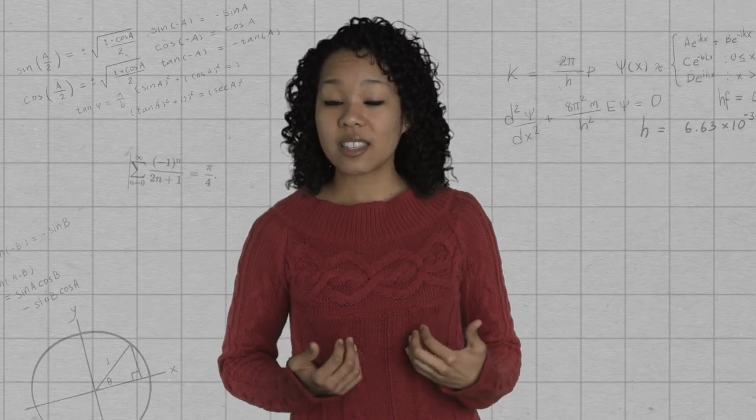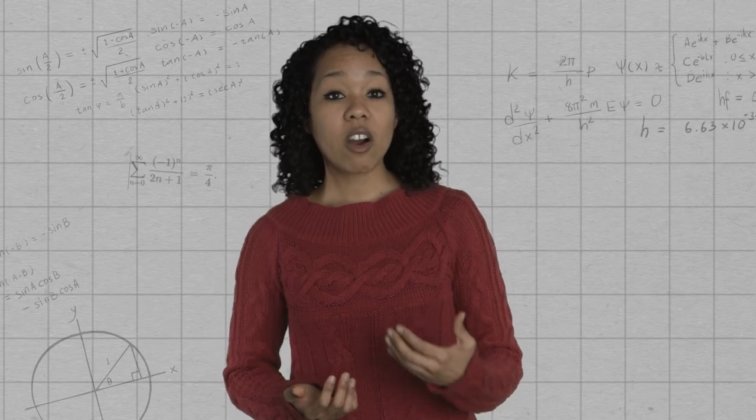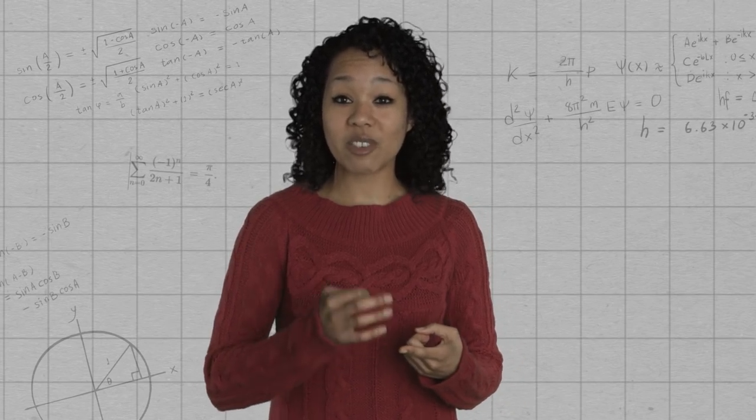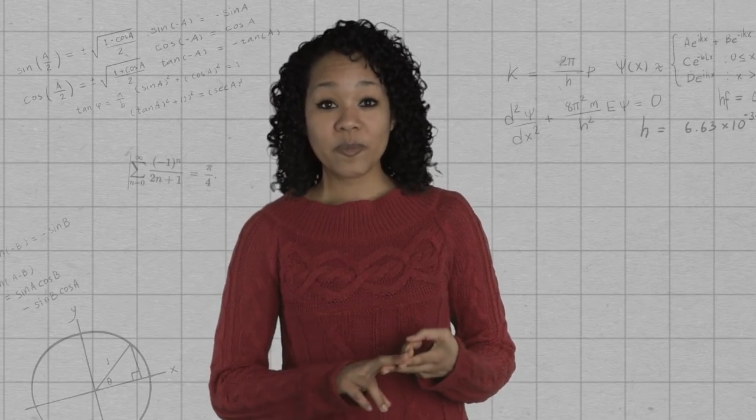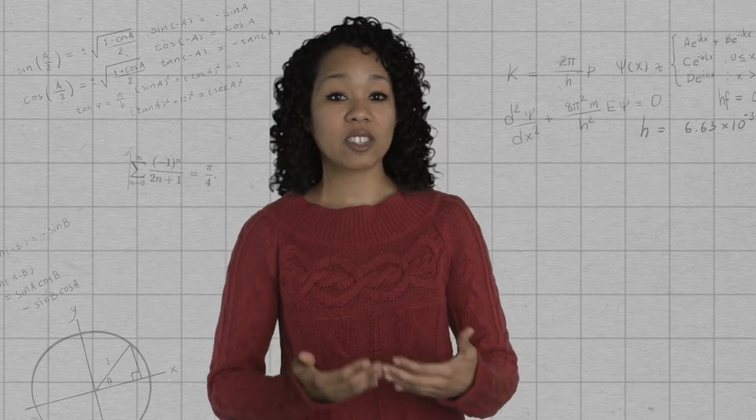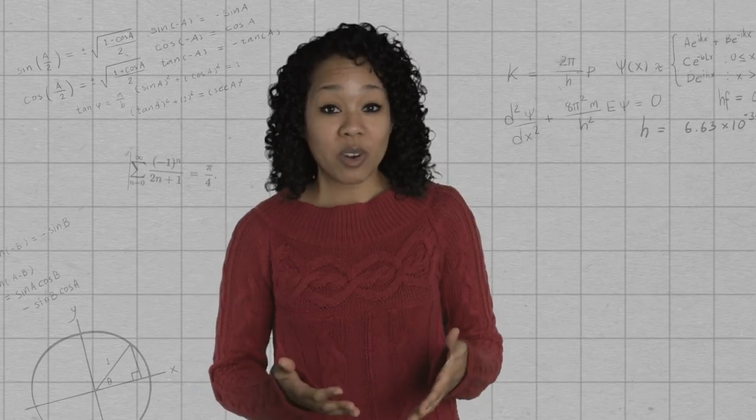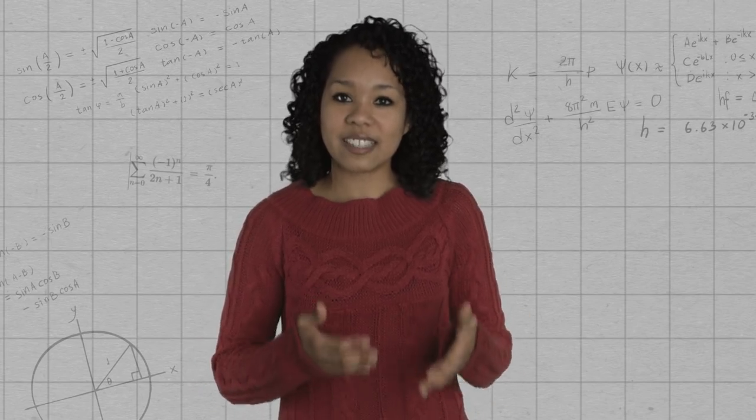It's a theorem that says that we can find unique integers Q called the quotient and R called the remainder so that number 1, R is bigger than or equal to 0 but strictly less than 5. And number 2, so that 14 can be written as 5 times Q plus R. And now it's clear why R, the remainder, must be 4 and Q, the quotient, must be 2, i.e. 14 is 10 plus 4.